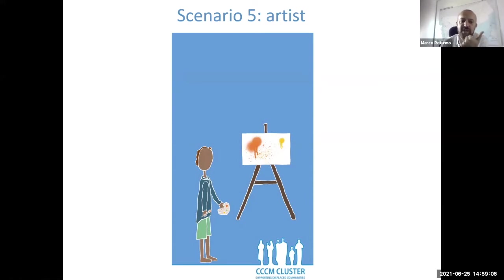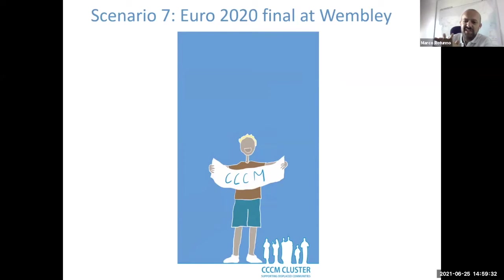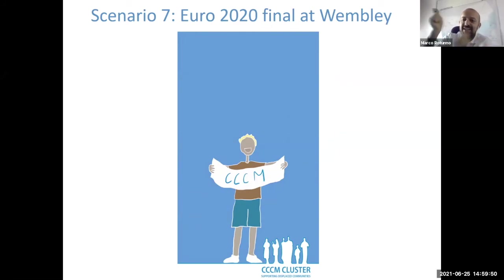The Artist group: you are calling a very famous artist — not necessarily a painter, any artist or musician — and need to commission an art product on CCCM. In this phone call, you have 30 seconds to explain what we need. The Followers group: what are you saying to your personal social media followers about what you do in CCCM? And the Stadium group — you are at Wembley on the 11th of July, the whole world will see: what would you put on your sign?